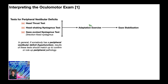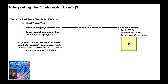When somebody has a hypofunction, there's a mismatch between the vestibular information coming from one ear and the vestibular information coming from the other, and that causes impaired gaze stabilization. So the exercises we give need to target improvements in gaze stabilization, and in general, those are these exercises right here.